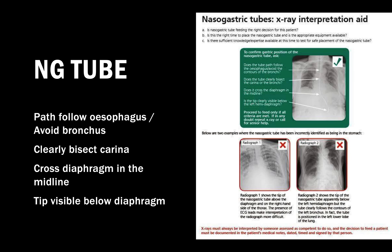We may also be asked to comment on NG tube position, especially in critical care. An NG tube won't go through the airway in an awake patient, but if used for feeding it's important to check four criteria: one - the path follows the esophagus and avoids the bronchus; two - it clearly bisects the carina; three - it crosses the diaphragm in the midline; four - the tip is visible below the diaphragm.